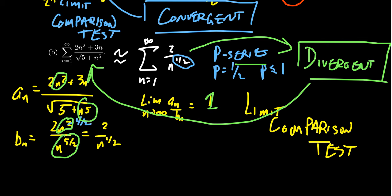For the limit comparison test, you look at the dominant terms of growth in the simplified sequence. If you're uncertain about which terms dominate, use L'Hôpital's rule. Looking at the dominant terms will often lead to a geometric or p-series, which are much easier to determine the convergence of.